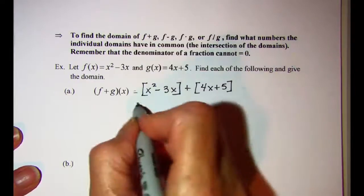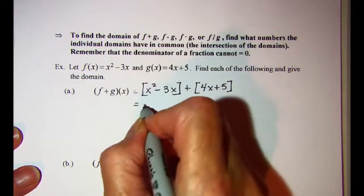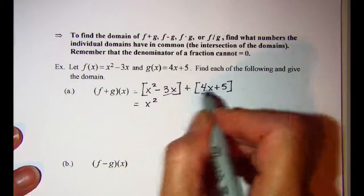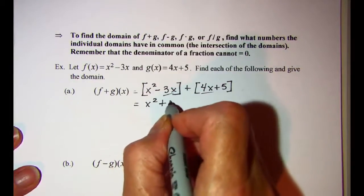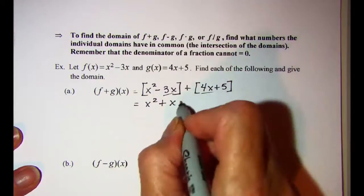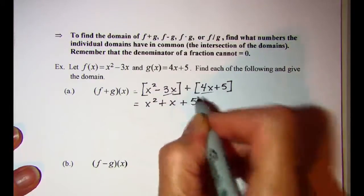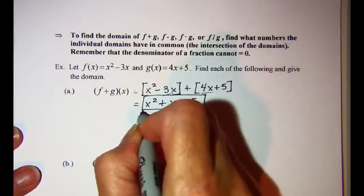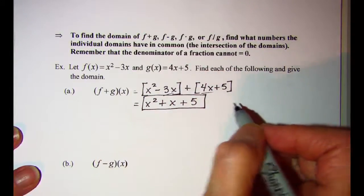This is the same as x squared, combining terms here, plus x plus 5. This is f plus g of x.